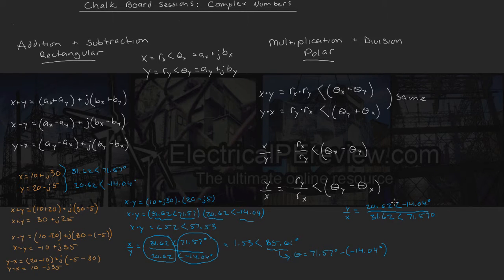Just like before, we're going to divide these two values, and then subtract the angles. y divided by x gives us, plug it in, a magnitude of 0.65 at an angle of negative 85.61 degrees. And again,